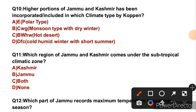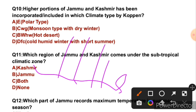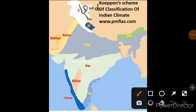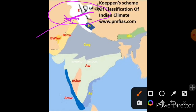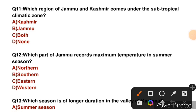Question 10: Higher portions of Jammu and Kashmir have been incorporated into which climate type by Koppen? The higher interior region of Jammu and Kashmir, referred to as the cold arid zone, falls under Koppen's cold desert classification.